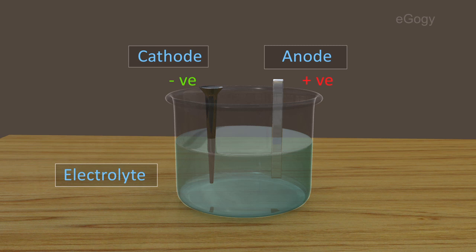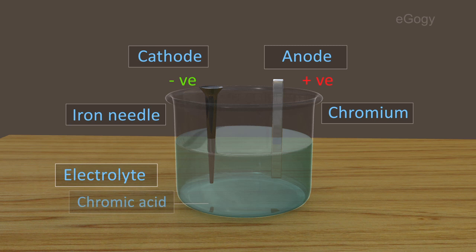We have to plate chromium on an iron needle. For this, we can use chromium as anode, iron needle as cathode, and chromic acid as the electrolyte.